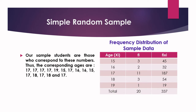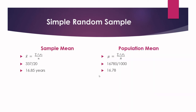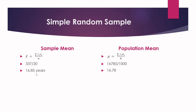Our next task is to check the sample mean against the population mean. To calculate the sample mean, we first make a frequency distribution of the sample data. Ages are 15, 16, 17, 18, 19 with their respective frequencies. We then multiply each age by its frequency: 15 × 3 = 45, 16 × 2 = 32, and so on. The sample mean x̄ = ΣfᵢXᵢ / n = 337 / 20 = 16.85.